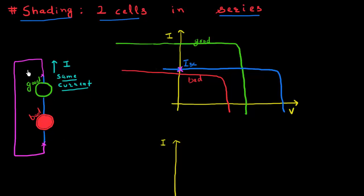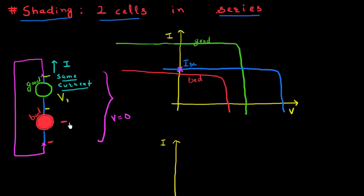I have short circuited this entire system such that the voltage across the series combination of these two cells is equal to zero. But that doesn't mean that individually each cell is short circuited. What could in fact be happening is that this good cell might be forward biased with a certain voltage, and this bad cell can be reverse biased with an equal but negative voltage. The sum of these two is equal to zero, but that doesn't mean the voltage across these individual cells is zero. The overall system is short circuited, but that doesn't mean the individual cell is short circuited.